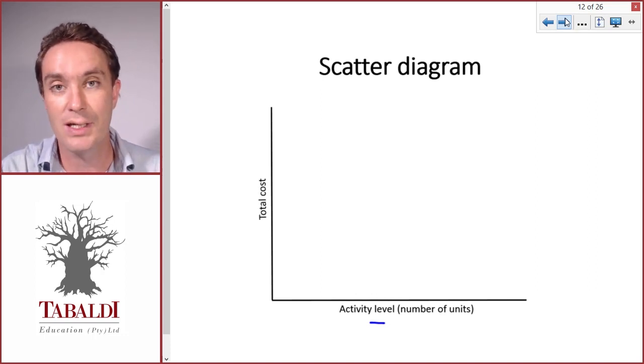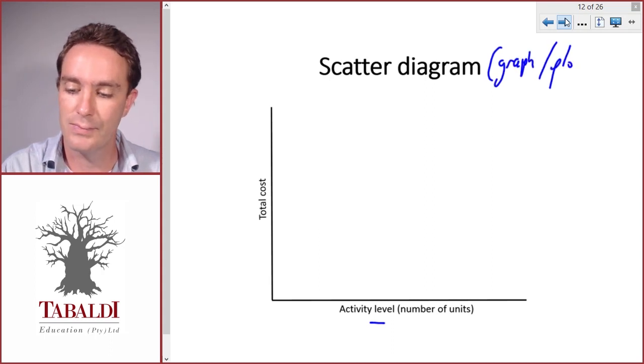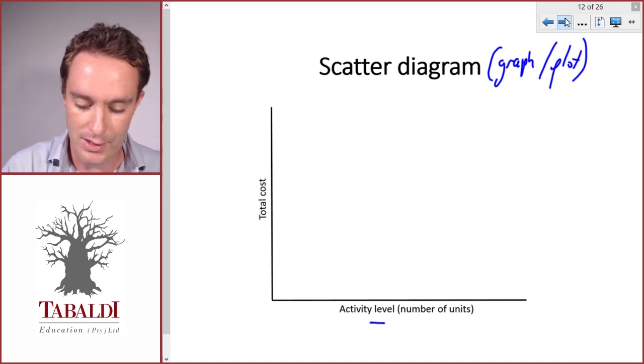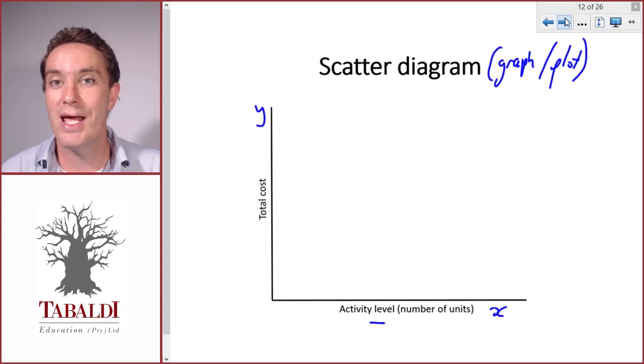First of all, the scatter diagram is sometimes referred to as the scatter graph or the scatter plot, so it's all the same thing. Here we've got the number of units on the x-axis and the total cost on the y-axis. Now when we estimate costs, the only information that we have available to us in the present would be past information.